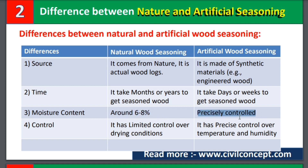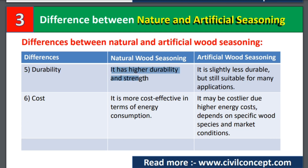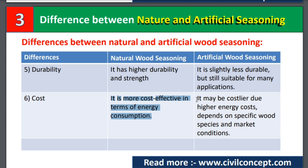Number four is control. Natural seasoning has limited control over drying conditions, while artificial seasoning has precise control over temperature and humidity. Number five is durability. Natural seasoning has higher durability and strength, while artificial seasoning is slightly less durable but still suitable for many applications. Number six is cost. Natural seasoning is more cost-effective in terms of energy consumption, while artificial seasoning may be costlier due to high energy costs, depending on specific wood species and market conditions.